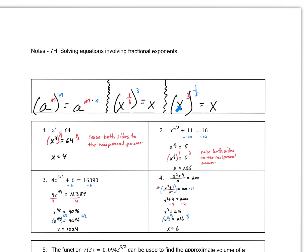Another example: if you have x to the third, or x cubed, and then you raise that to one-third, that also equals x. Because when you multiply three times one-third, again it's three over three. What we're demonstrating here is what happens when we use reciprocal powers. One-third and three over one are reciprocal powers — when we multiply them, we get one. We're going to use this concept when we solve our equations today.